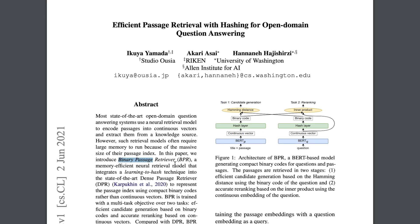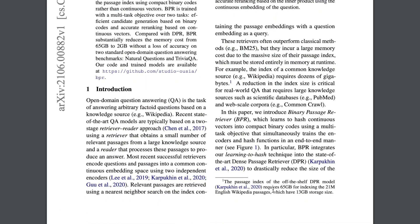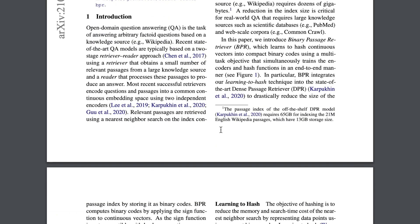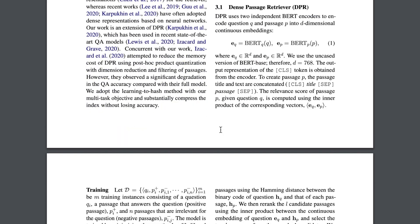This idea was introduced in the paper 'Efficient Passage Retrieval with Hashing for Open Domain Question Answering.' The high-level problem is using dense passage retrieval to retrieve information to supplement a question answering model. For example, you have the Wikipedia corpus, and you ask a question such as 'What is the atomic number of oxygen?' You use dense passage retrieval to return the Wikipedia article about oxygen or the section about the periodic table, to supplement the language model so it can attend to the retrieved context and say: the atomic number is eight.